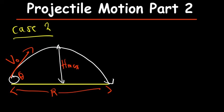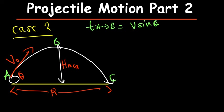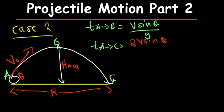We agreed to call the points A, B, and C. If we want to find the time from A to B, the time is given by v·sinθ divided by g. We derived these formulas yesterday. The total time, from A all the way to C, uses the same formula multiplied by 2: so 2v·sinθ divided by g.